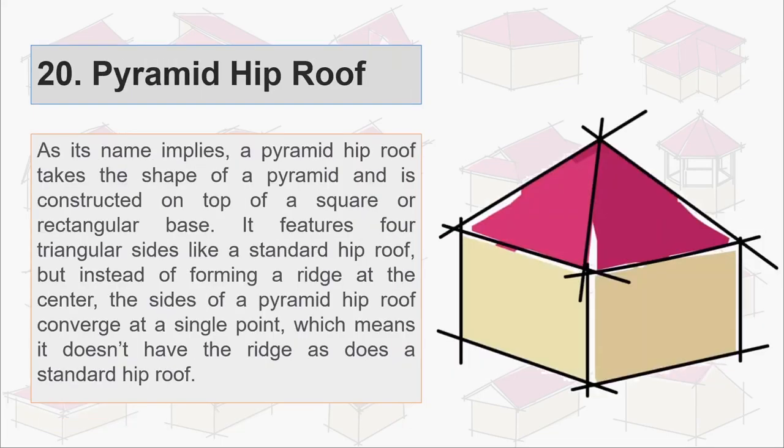Last we have pyramid hip roof. As its name implies, a pyramid hip roof takes the shape of a pyramid and is constructed on top of a square or rectangular base. It features four triangular sides like a standard hip roof, but instead of forming a ridge at the top, the sides of a pyramid hip roof converge at a single point, which means it does not have a ridge as does a standard hip roof.